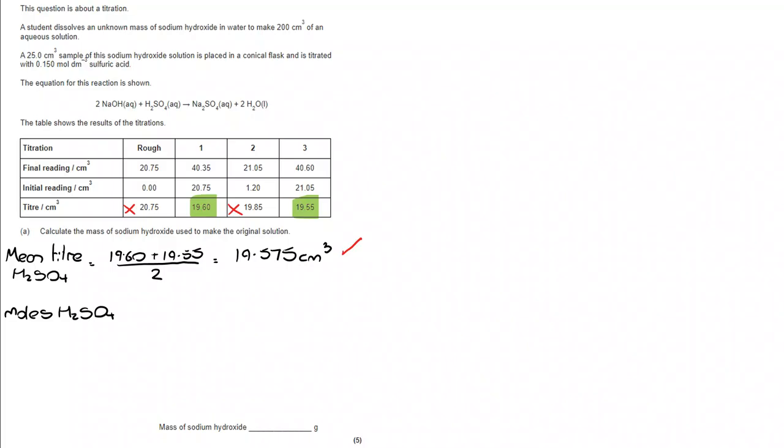Now that I've got that volume, I can work out the moles of H2SO4 because I've also been given the concentration, which you can see I've color coded here. That means we have 2.936 × 10⁻³ moles of sulfuric acid.